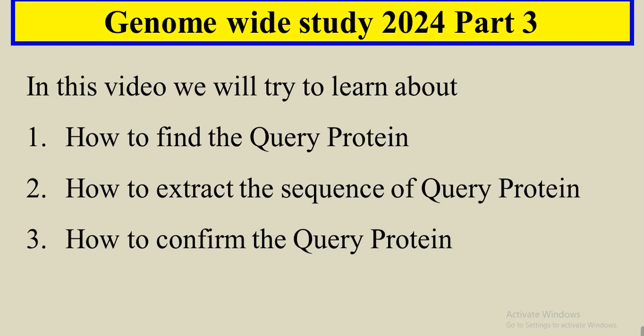So in this video we have to find the query protein, extract its sequences, and then confirm that this query protein is from the correct protein family. For example, when we take protein sequences from the Arabidopsis genome, we confirm through domain analysis whether the HMA domain is present in those sequences. If the HMA domain is present, we take those sequences as our query protein. If the domain is not present, we discard them.